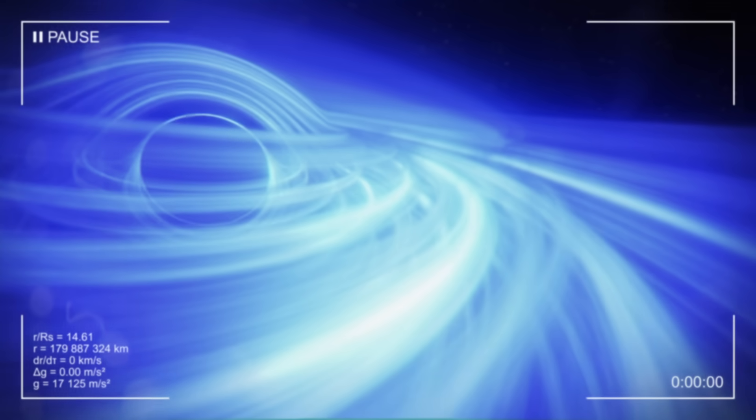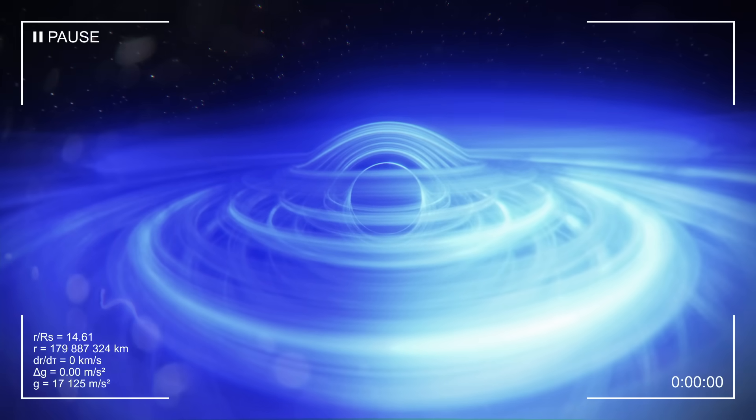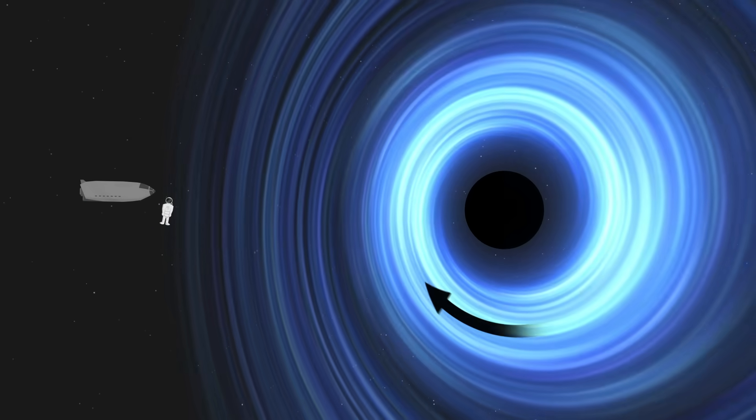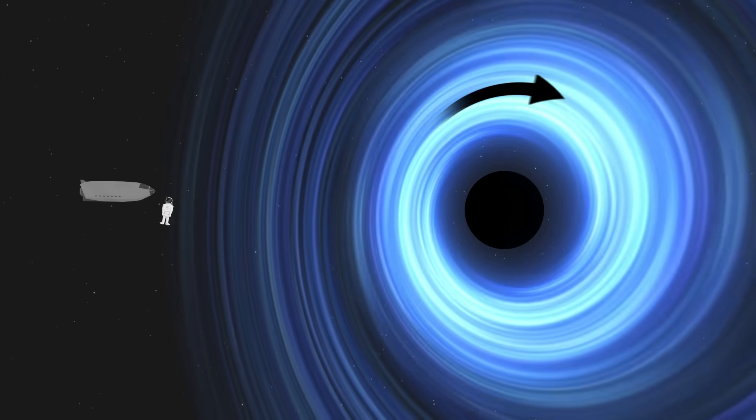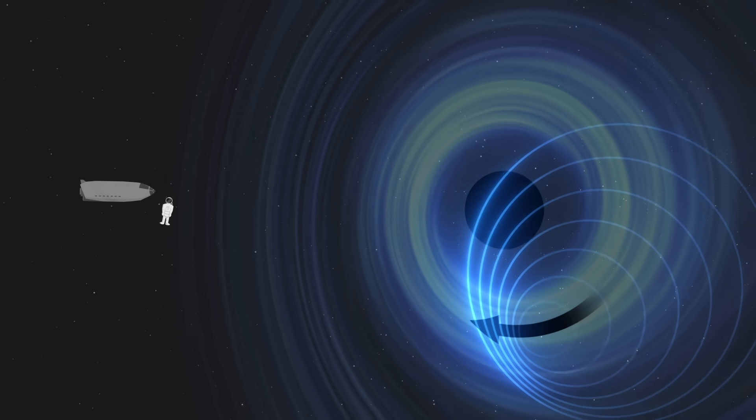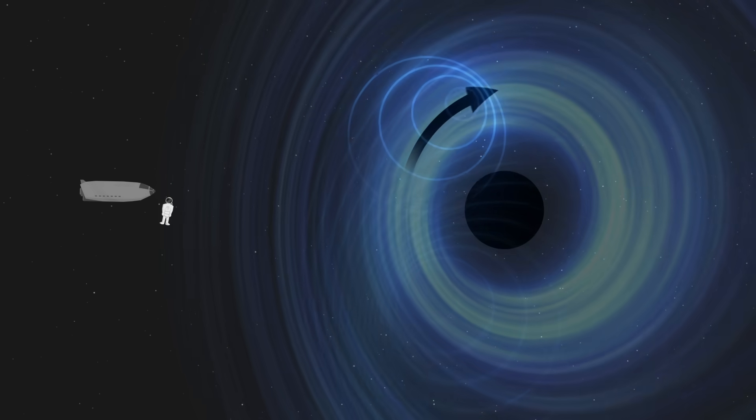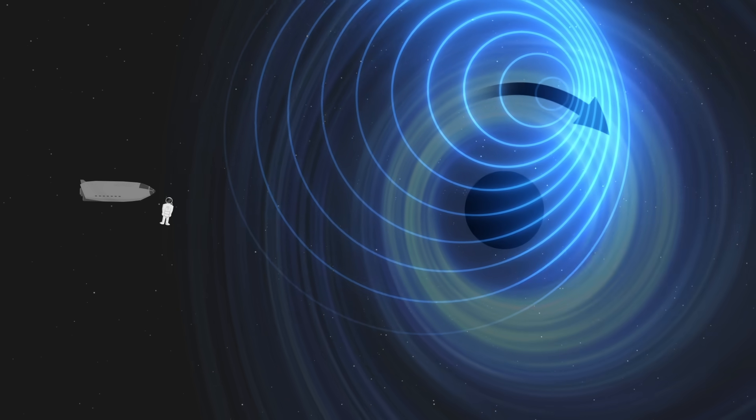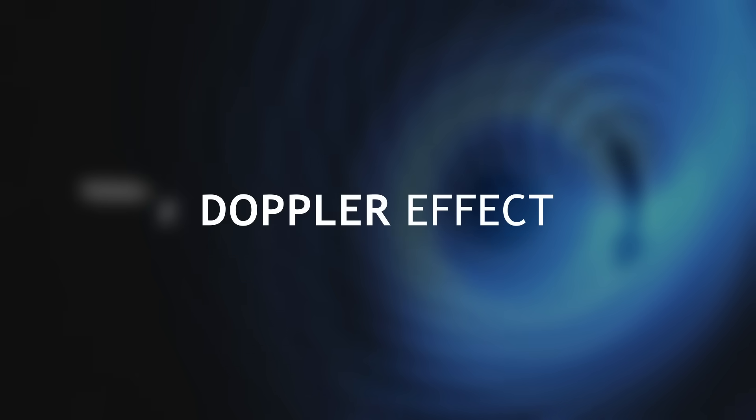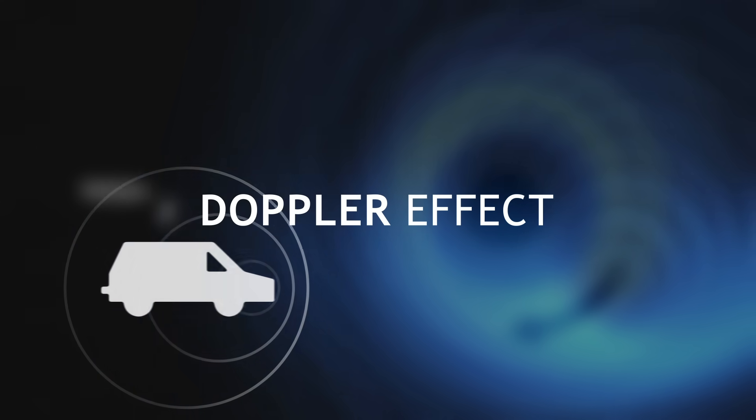Strangely, one side of the disk looks brighter than the other. To understand, the matter orbits very quickly, such that on one side it approaches us at high speed, while on the other side it moves away. On one side, the light waves get stacked together, we receive them with greater frequency, while on the other side the light gets stretched, we receive it with less energy. This is called the Doppler effect. It's the same phenomenon that occurs with sound waves when a car crosses the street.